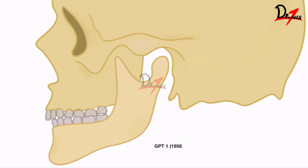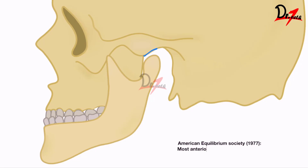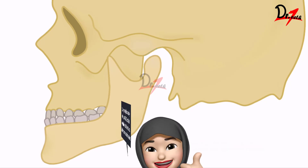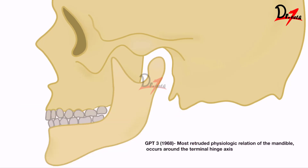The Glossary of Prosthodontic Terms, edition one, said that it is the most retruded relation and it is an unstrained position. The American Equilibrium Society in 1977 changed the position from the rearmost and said that it is the most anterior and uppermost position. GPT-3 stated that it is the most retruded physiologic relation of the mandible and it occurs around the terminal hinge axis.